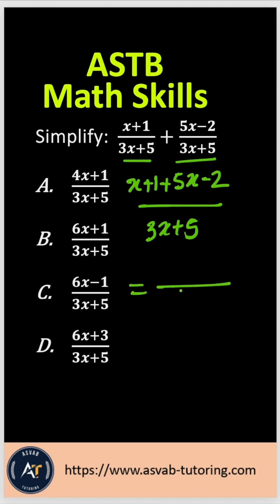Now combine the like terms. That gives you x plus 5x gives you 6x and minus 2 plus 1 gives you minus 1 over 3x plus 5, right? With that, the correct answer is option C.